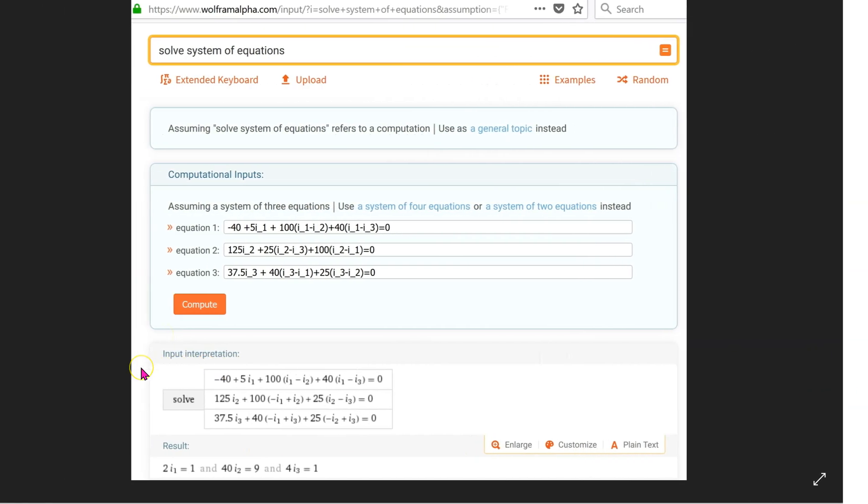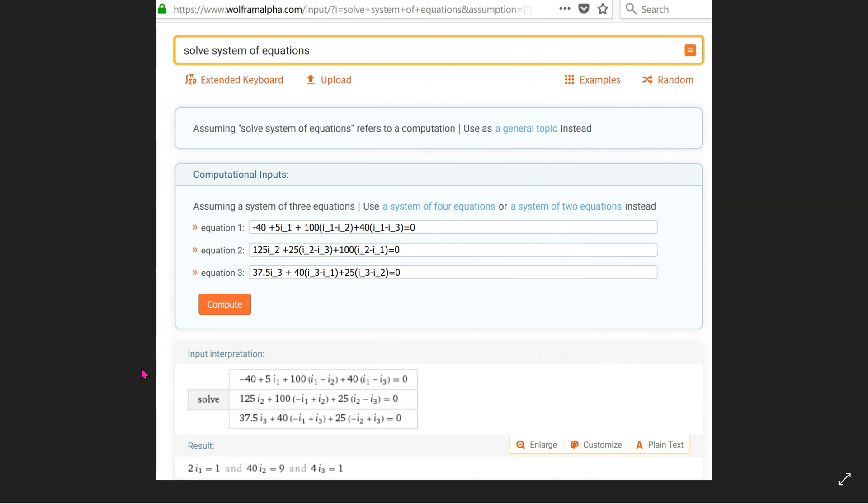We can use the online resource Wolfram Alpha to solve these three equations. So in the web interface the three equations can be written as is and the system can recognize these equations and solve them, and the solution is shown here.